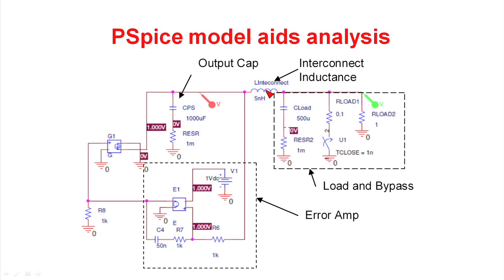In one case, we started with 0 nanohenries of interconnect inductance, and we varied it up to as much as 500 nanohenries. Those are the extreme cases. One represents the power supply co-located with the load, and the second case might be a power supply that's been cabled to the load or has a relatively long run across a motherboard.